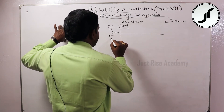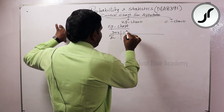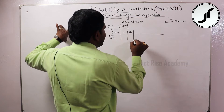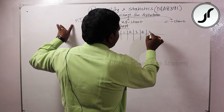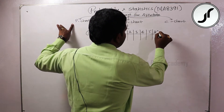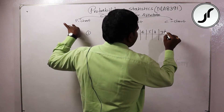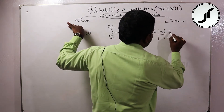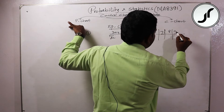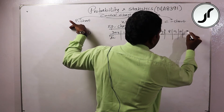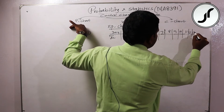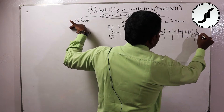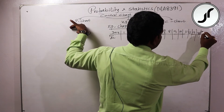The number of defectives is recorded over 15 days: first day, second day, third day, fourth day, fifth day, sixth day, seventh day, eighth day, ninth day, tenth day, eleven, twelve, thirteen, fourteen, fifteen.